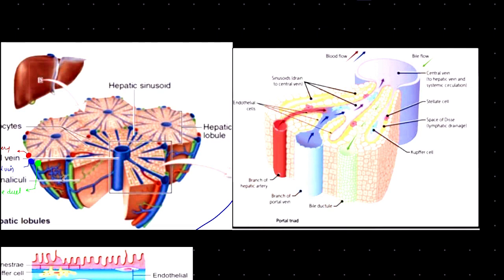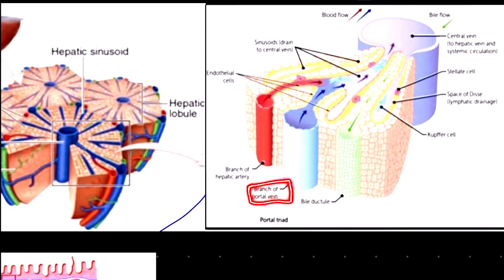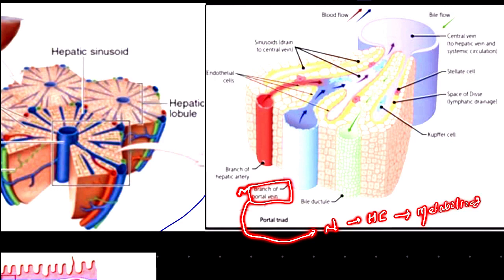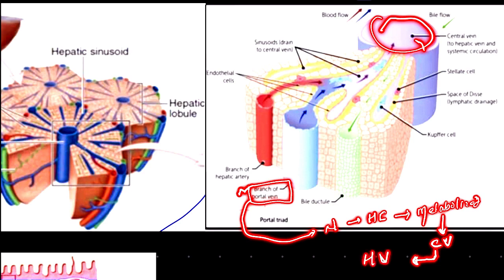An important point about the portal vein: it carries nutrition to hepatocytes, where metabolism occurs. The metabolized nutrition is then sent to the central vein. From the central vein, it goes to the hepatic vein, and the hepatic vein drains into the inferior vena cava. This is the fate of nutrition.